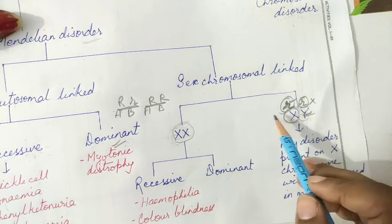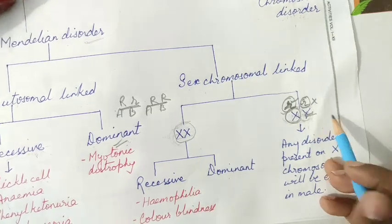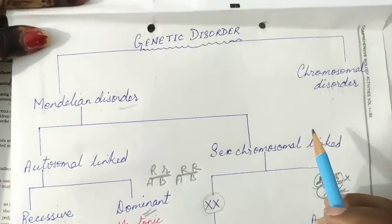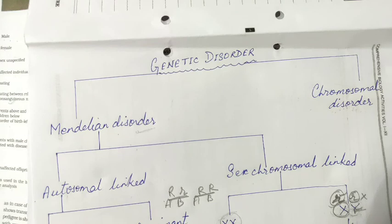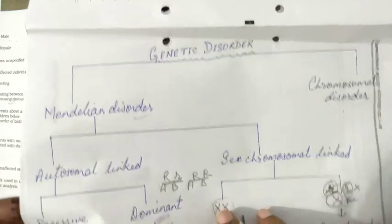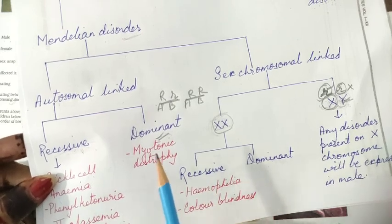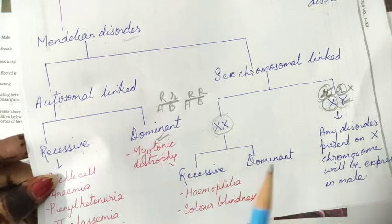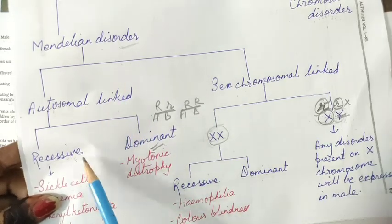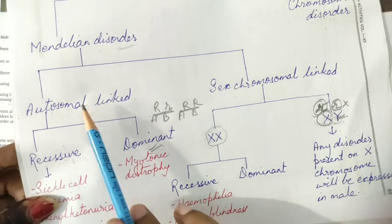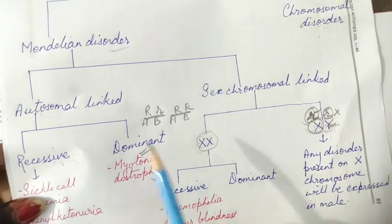Sex-linked disease can also be recessive or dominant. In females, since both X chromosomes are homologous, we check dominant and recessive conditions. In males, any point mutation on the X chromosome will make him a sufferer regardless. So in summary, we have four types of Mendelian disorders to study: autosomal linked recessive, autosomal linked dominant, sex chromosomal linked recessive, and sex chromosomal linked dominant.